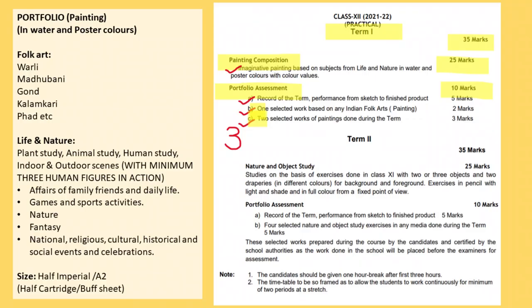This is the image for Fine Arts Practical. In term 1, you are going to have painting composition. It is for 35 marks — your exam will be for 25 marks and your portfolio will be for 10 marks. In portfolio, first is record of the term performance from sketch to finished product, which is 5 marks. Then one selected work based on any four-card form, which is 2 marks. And then two selected works of paintings done during the term, which is 3 marks. So total minimum 3 works you have to put in your portfolio.